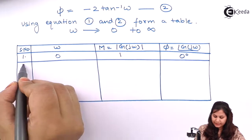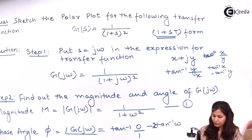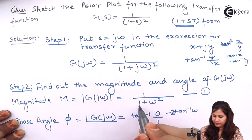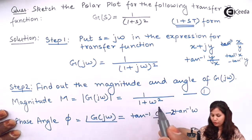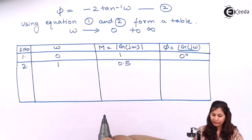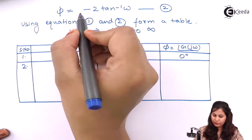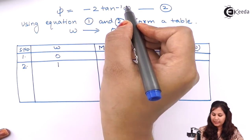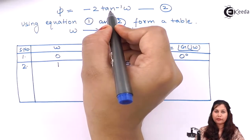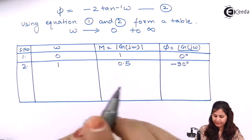Now let's take the second value ω = 1. In the magnitude equation, putting ω = 1 gives 1 / (1 + 1) = 1/2, so the magnitude is 0.5. For the phase angle, it will be −2·tan⁻¹(1). Tan⁻¹(1) is 45 degrees, so 2 × 45 = 90 degrees, giving a phase angle of −90 degrees.